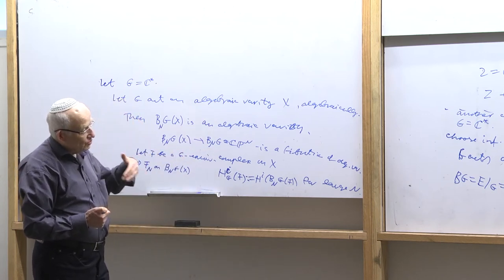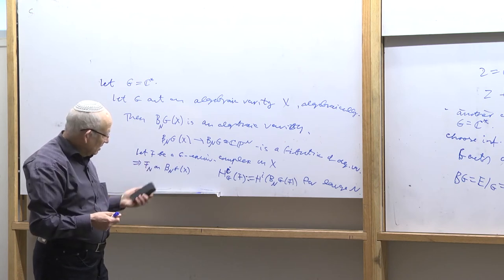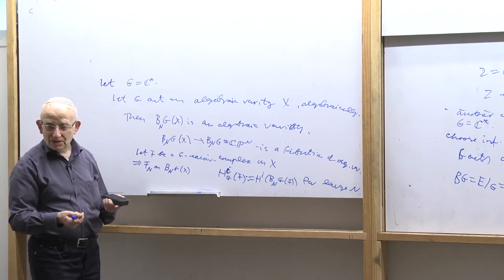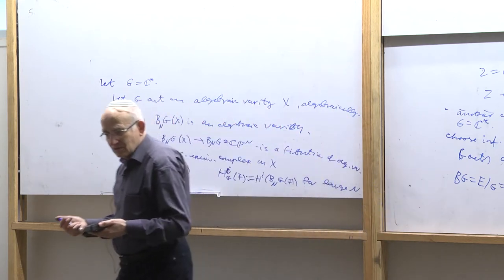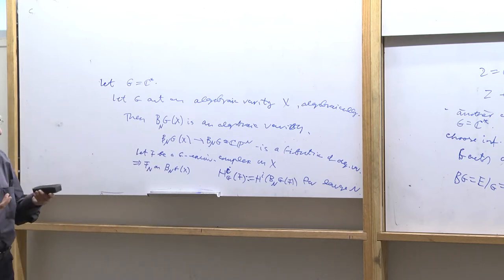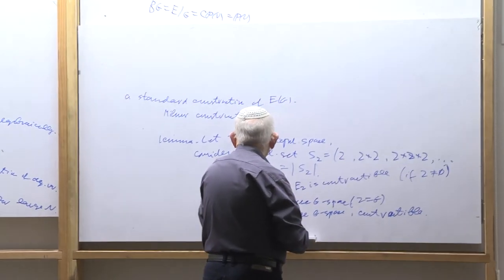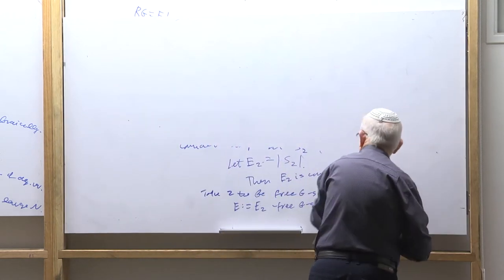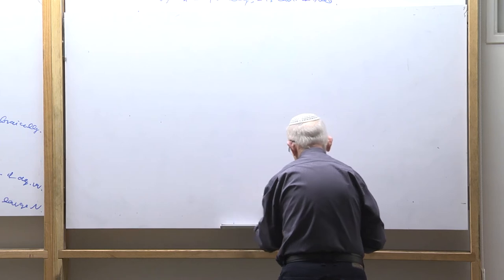In other words, you should consider this as some kind of infinite procedure — you all the time consider the limit, because you would like every time to work with some actual finite-dimensional varieties. You can work with the infinite-dimensional space BG, but it is inconvenient because you don't have tools, you don't have theorems. Now let me formalize the theorem which will be used all the time.